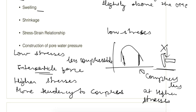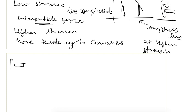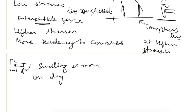The next point is swelling behavior. When a flocculated structure is present, more water can enter into the pores, so swelling is more on the dry side of optimum. On the wet side of optimum, swelling will be less because more water cannot enter into the pores — there are fewer pores in that case.